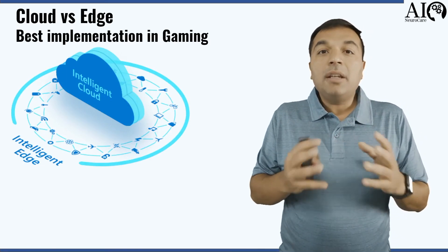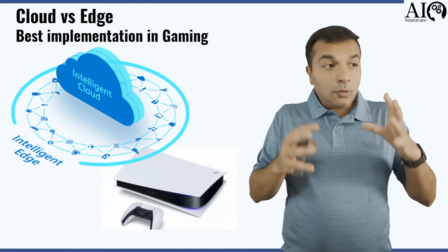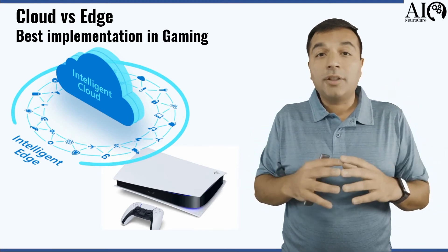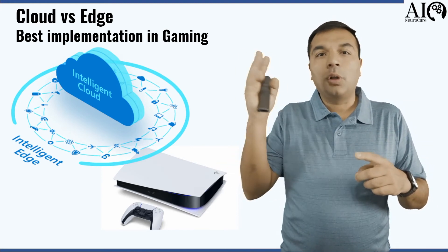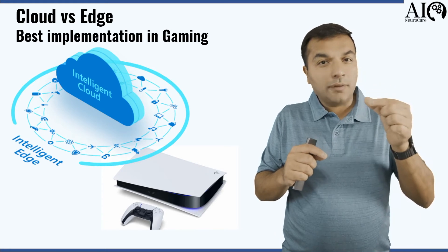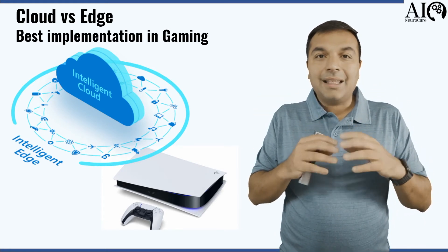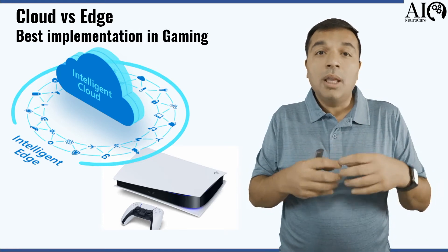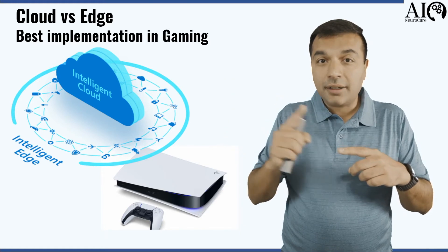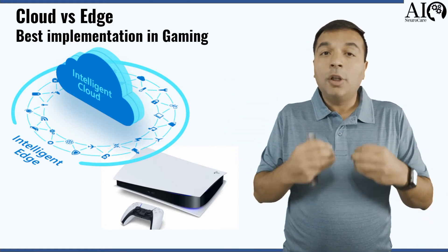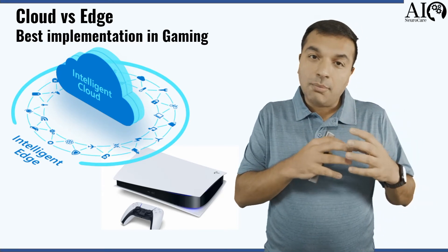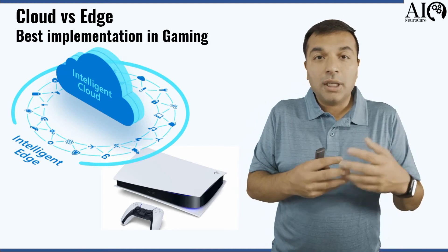The main reason edge computing became such a significant field was because of the gaming industry. You put a disc in your PS5 or Xbox and it uploads 10 to 25 gigabytes of graphics. But in a multiplayer game, you don't upload all the graphics back and forth — you just give the location or a limited amount of information to the cloud and back. The significant GPU power in an Xbox or PlayStation decreases the workload of the cloud, decreases data transfer needed, and still delivers a very good low-latency gaming experience. The main industry that took such a big advantage of edge computing is gaming.